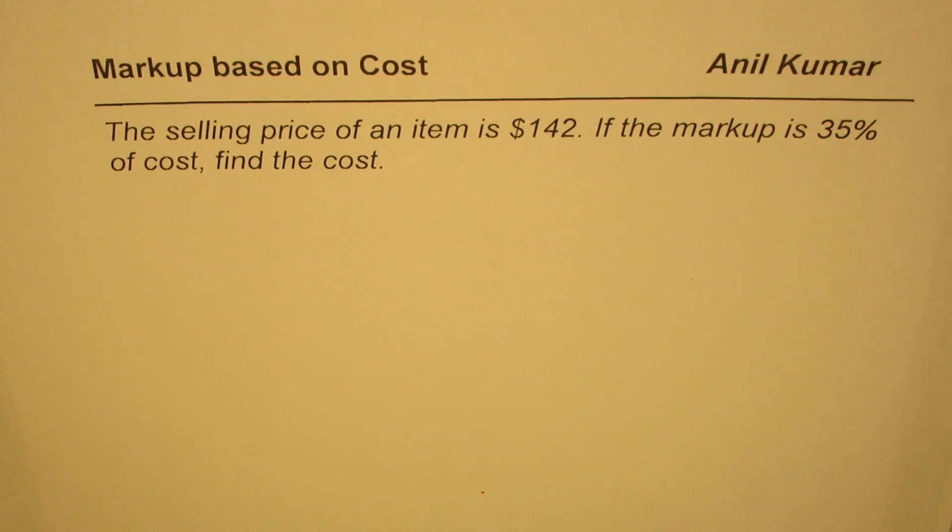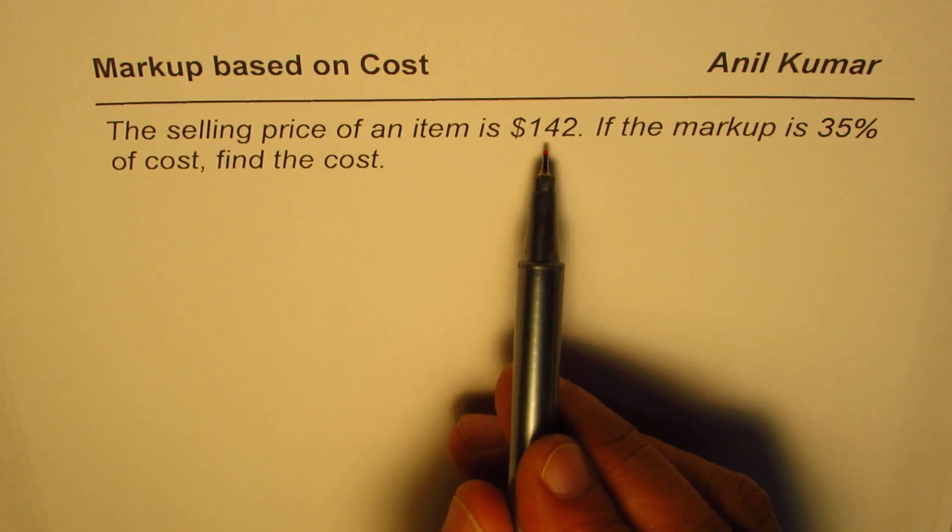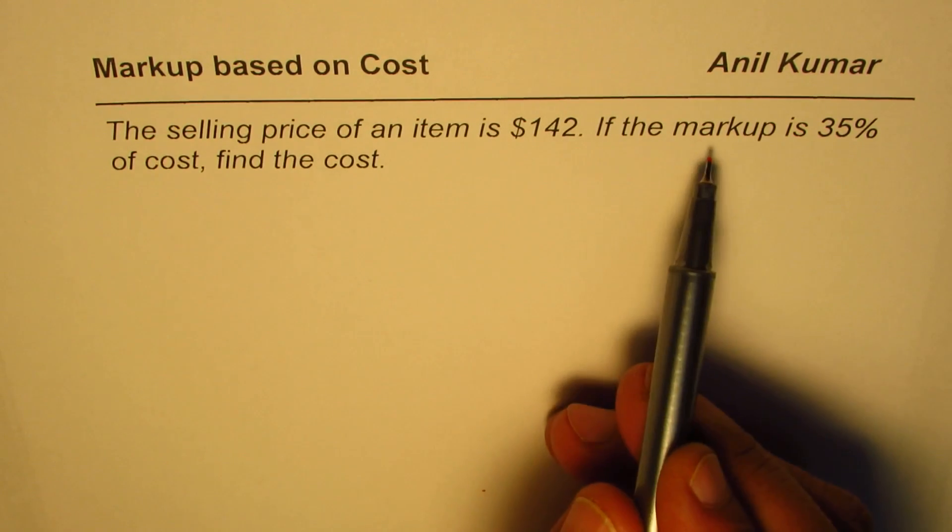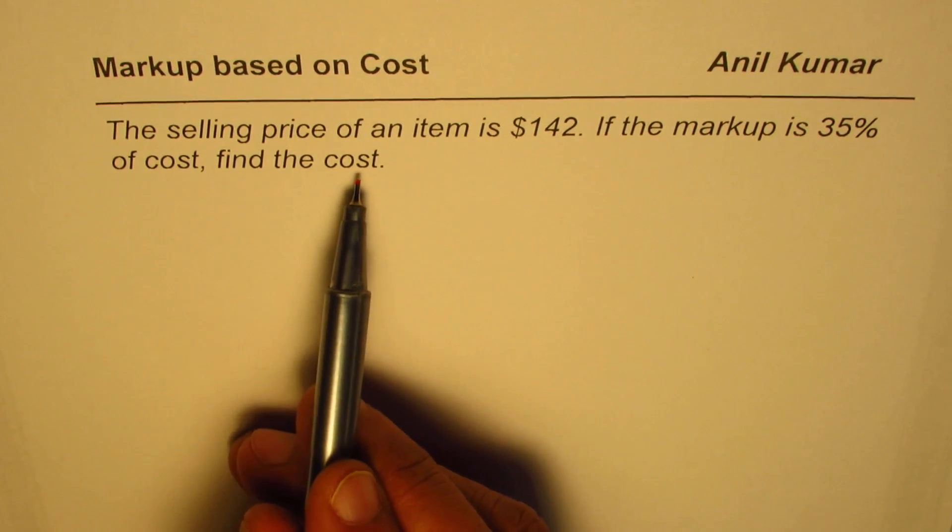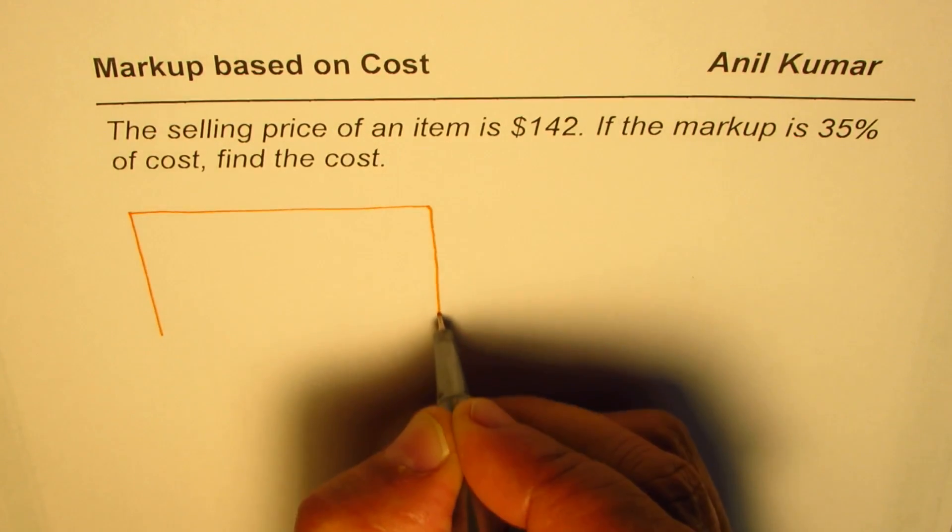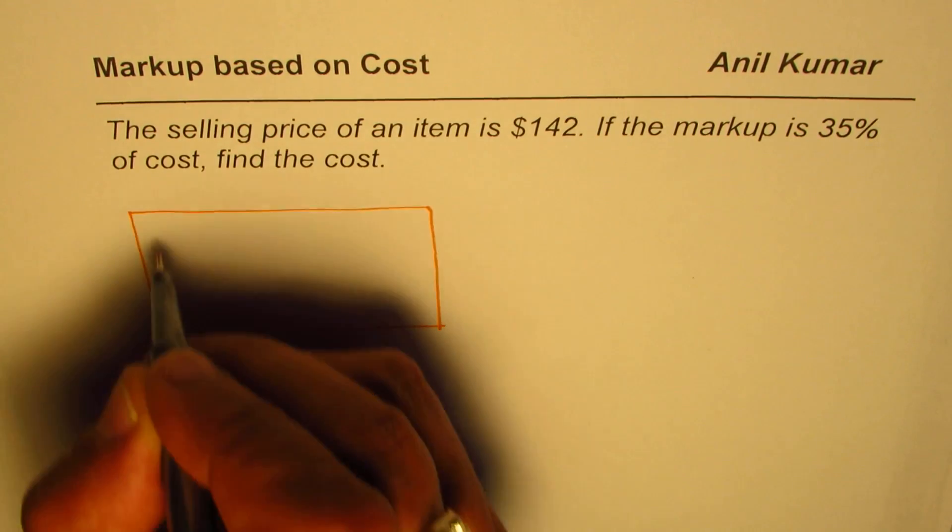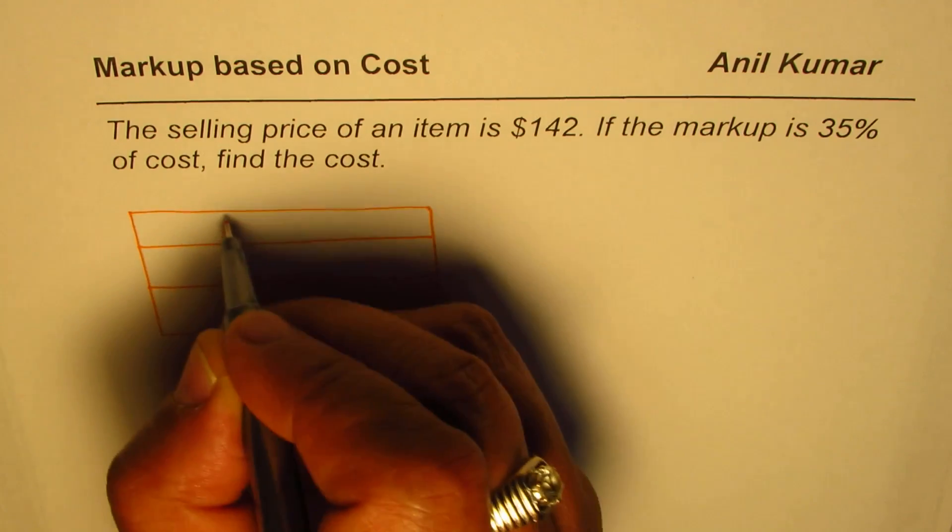I'm Anil Kumar. Here is an excellent question on markup based on cost. The selling price of an item is $142. If the markup is 35% of cost, find the cost. We know cost plus markup is the selling price. We'll make a table, which is a 3 by 3 table, which helps to understand this relation.